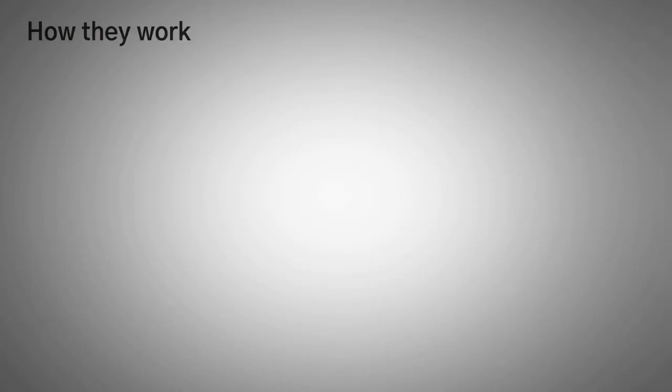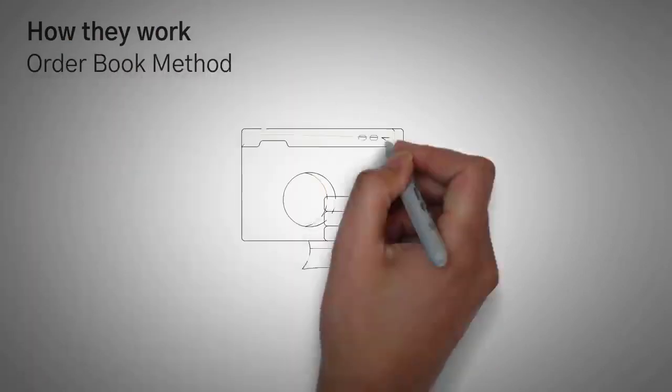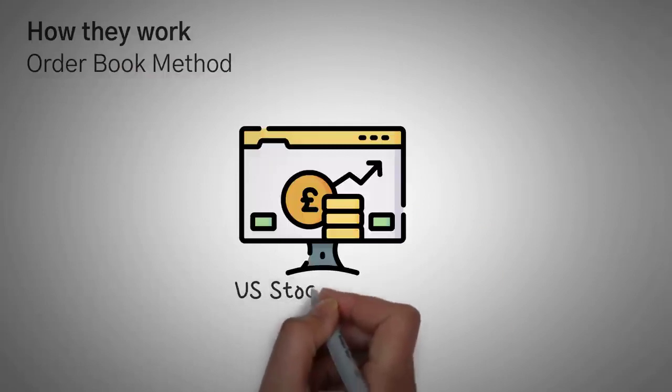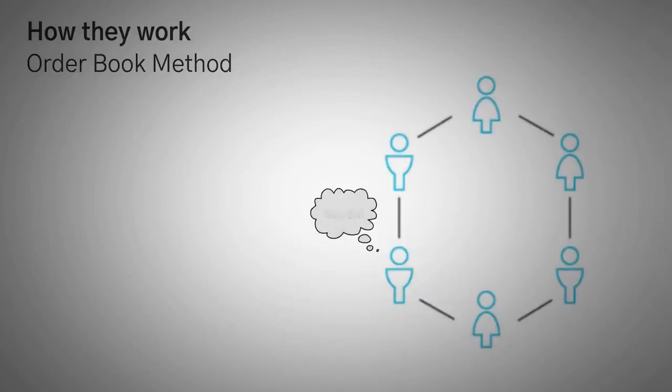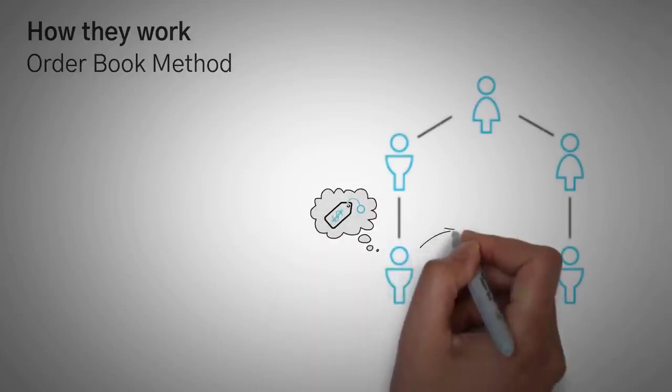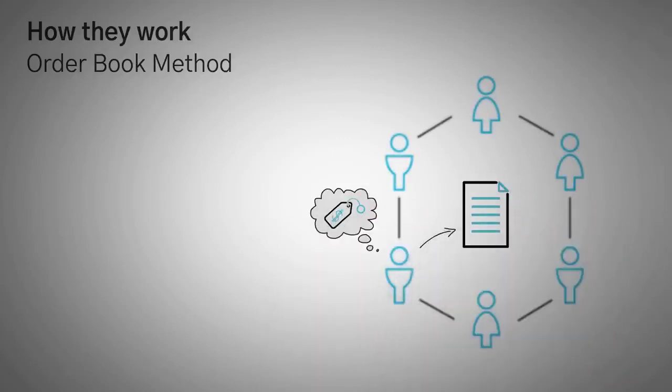Now, let's get on to how they actually work. First off, we want to explain to you the order book method. So the order book method is the exact method that the United States stock market uses. In fact, it works and it has worked for ages, but it does have some drawbacks when it comes to decentralized finance. So how it works is if you want to buy or sell something, you simply pick a price you want to buy that asset for, and then you put in an order.